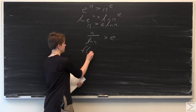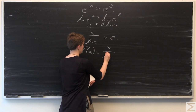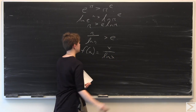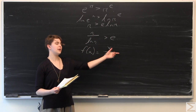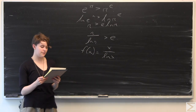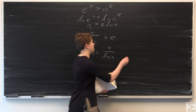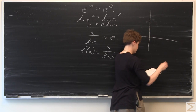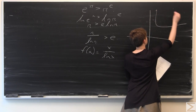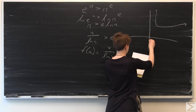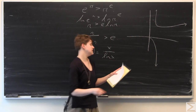Let f of x be equal to x over ln of x. As we can see, instead of pi over ln of pi, we now have x over ln of x. If we consider the graph of this function, it's going to look something like this — going up here, with an asymptote here, and then dropping down there.